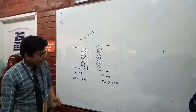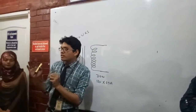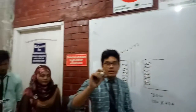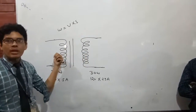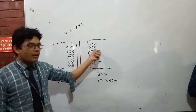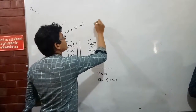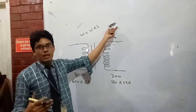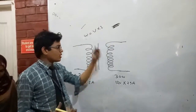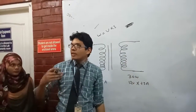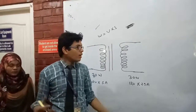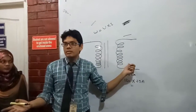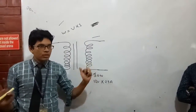In a step-down transformer you will notice that the secondary wire is thicker than the primary wire. The secondary wire must have greater current-carrying capability. Once the current increases in the secondary, the wire must be designed to carry it safely. If you use the same thin wire on the secondary, it will burn out because the higher current causes more heat.